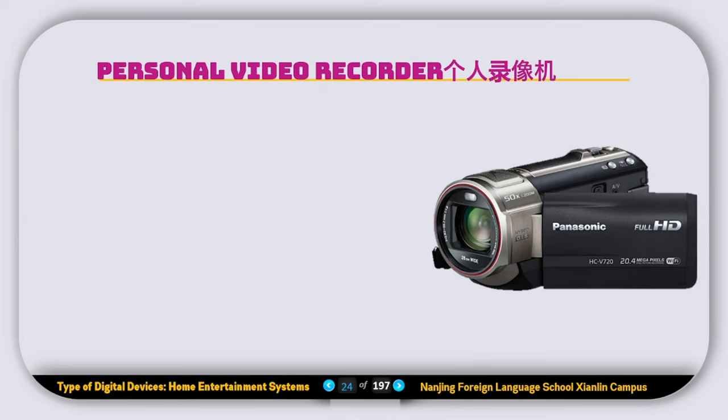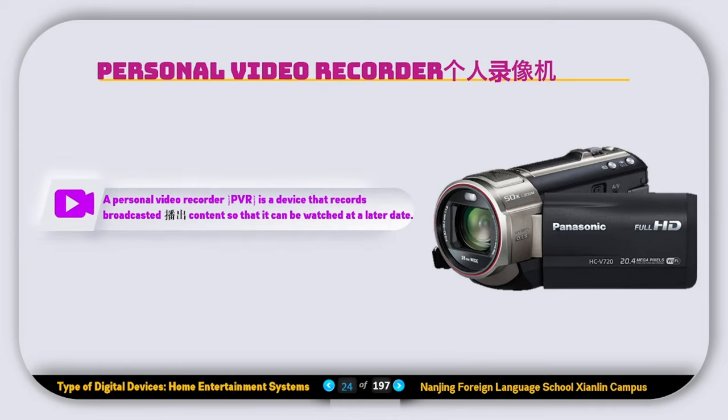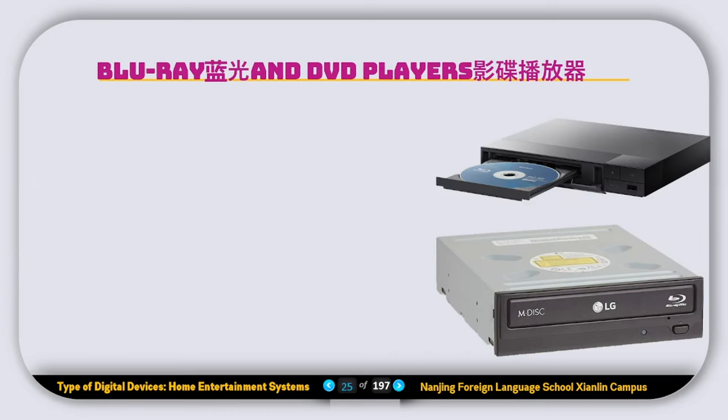Some sound systems can connect to the internet to play music stored online. The next device is the Personal Video Recorder, or PVR. A PVR is a device that records broadcast content so that it can be watched at a later date.